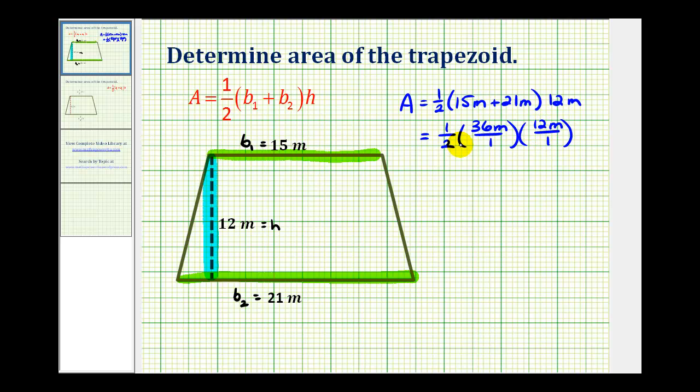Before we multiply, we want to simplify any common factors between the numerators and denominators. Notice that 2 and 36 share a common factor of 2. To show this, I'm going to write this as one-half times, writing 36 as 2 times 18 meters, all over 1 times 12 meters over 1. Here we can see the 2 over 2 simplifies to 1.